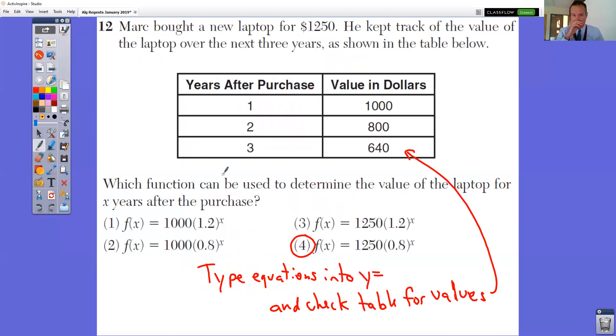In question number 12, Mark bought a new laptop for $1,250. He kept track of the value of the laptop over the next three years. So notice that the laptop is going down in value. Which function can be used to determine the value of the laptop after X years? You could actually eliminate choices one and choice three right away, because those have a 1.2 inside the parentheses. That would mean that the value is going up. We can clearly see that the value is going down. So it has to be a number that's less than one inside the parentheses.